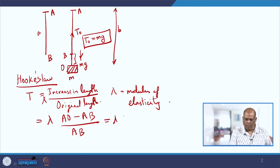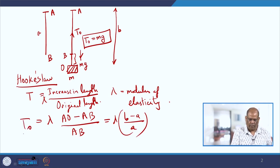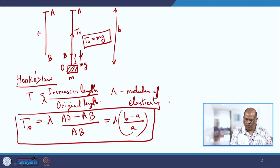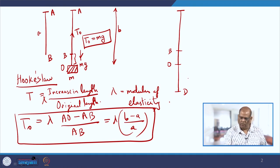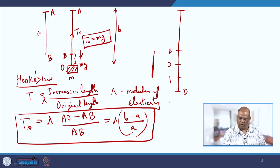So this is lambda times increase in length, which is AO minus AB, divided by original length which is AB. This is equal to lambda times (B minus A) divided by A, and that is your T0. Once you have this setup, you pull the string up to the point D and let it go, and this elastic string is going to oscillate.